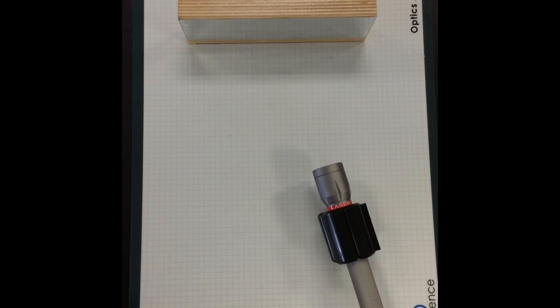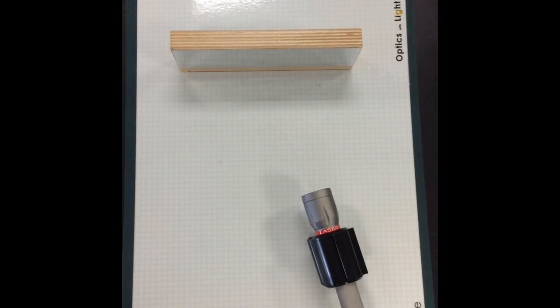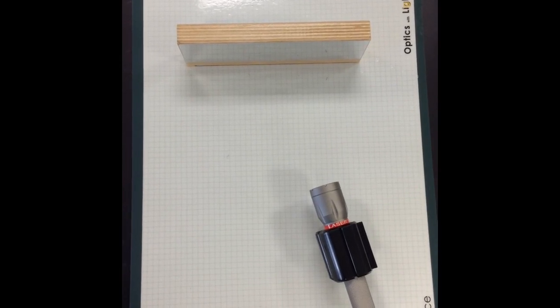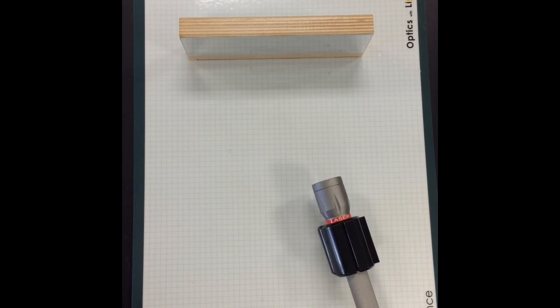In the first part of our CPO Lab today, we are going to be using a laser beam. The flashlight, that is the laser beam, says laser on it in white in a red strip. Be careful not to shine that in your eyes or anybody else's.